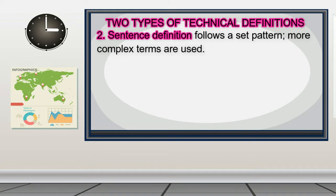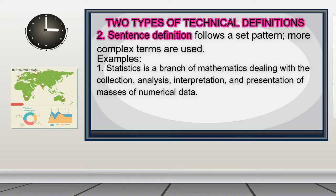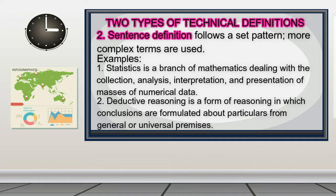Sentence definition, on the other hand, follows a set pattern. More complex terms are used. For example: 'Statistics is a branch of mathematics dealing with the collection, analysis, interpretation, and presentation of masses of numerical data.' 'Deductive reasoning is a form of reasoning in which conclusions are formulated about particulars from general or universal premises.'